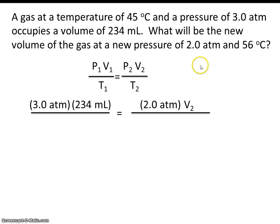And they give us a couple temperatures. The initial temperature is 45 degrees C and the final temperature is 56 degrees C. Of course, we can't use Celsius, we can only use Kelvin, so convert those to Kelvin.